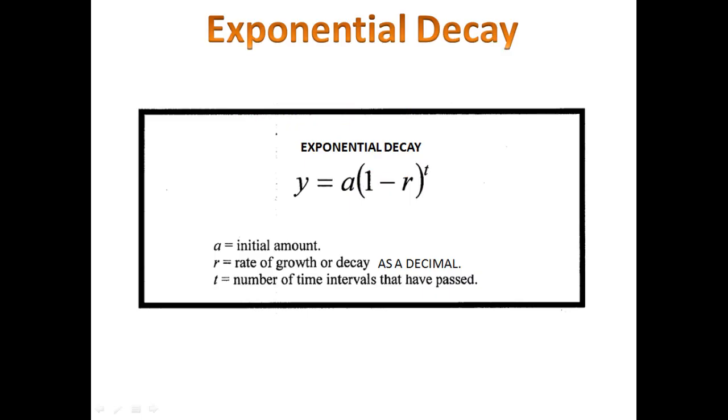Exponential decay is given by the formula that you see right here, y equals a times 1 minus r to the t. a is the amount that you started with, r is the rate of decay as a decimal, and t is the amount of time that's passed.